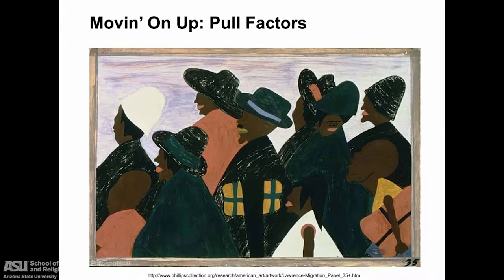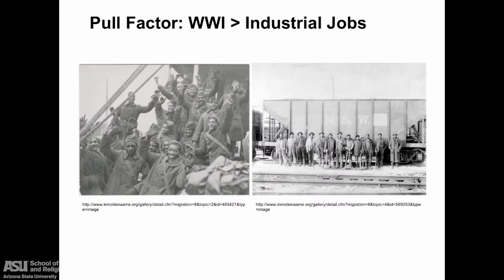What were the pull factors that encouraged African Americans to leave the South? The most important pull factor was industrial jobs, particularly during World War I. A labor shortage occurred when immigration from Europe dropped dramatically, and eventually when millions of American men were shipped off to war. Also, the quota laws of 1921, 1924, and 1929 severely restricted immigrant labor from Southern and Eastern Europe. Millions of jobs became available in America's steel mills, packing houses, and automobile factories.